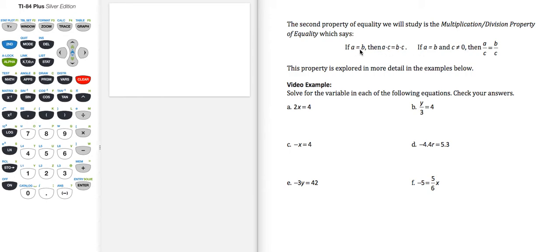So basically, it says if I start with a statement of equality, an equation, if I multiply the same quantity on both sides or divide both sides by the same quantity, then I am creating an equivalent equation and the solution to that equivalent equation will be the same as the solution to the original.